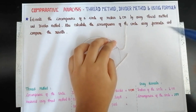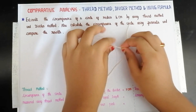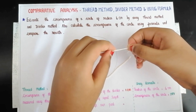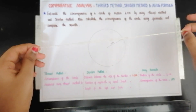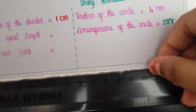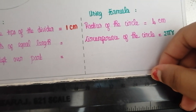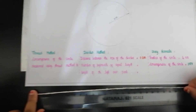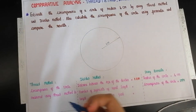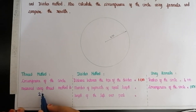Put a mark at the point where the thread touches the end of the circle. Now stretch the thread and measure its length. The circumference of the circle measured using thread method is 25 cm.